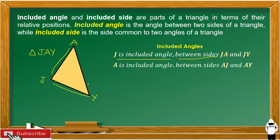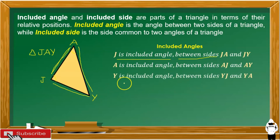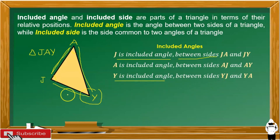We are going to look for the included angles. Angle J is the included angle between sides JA and JY. Angle A is the included angle between sides AJ and AY. Angle Y is the included angle between sides YJ and YA.